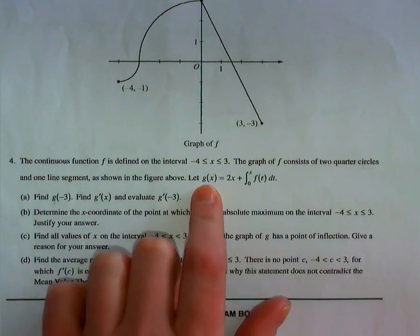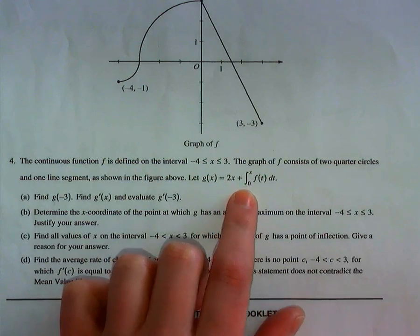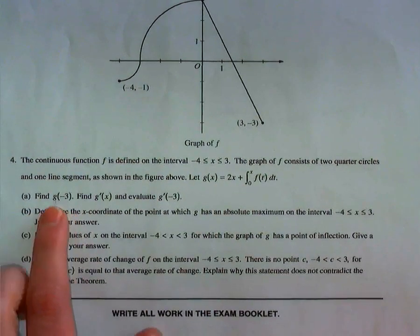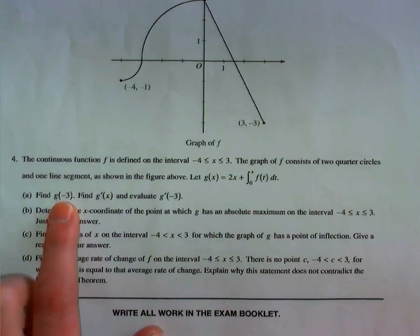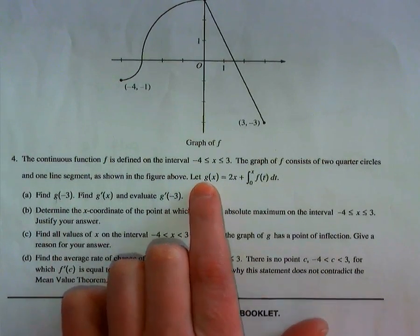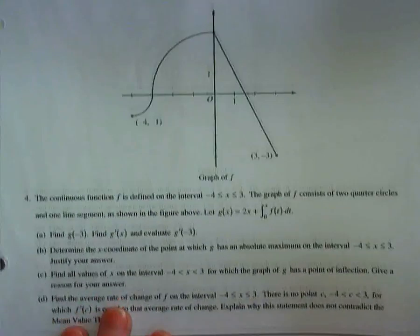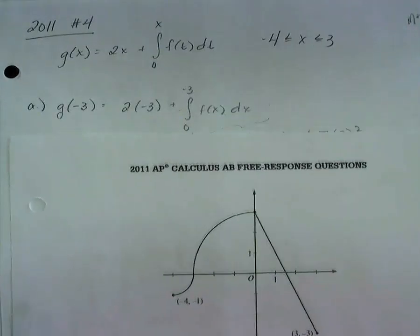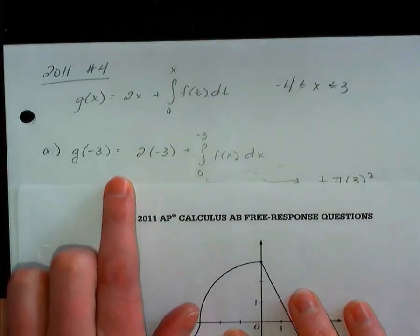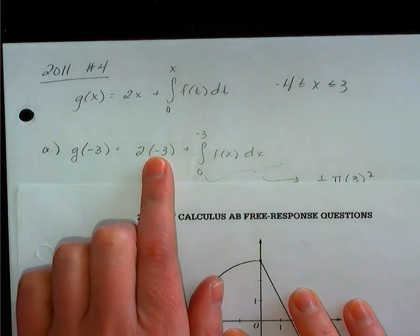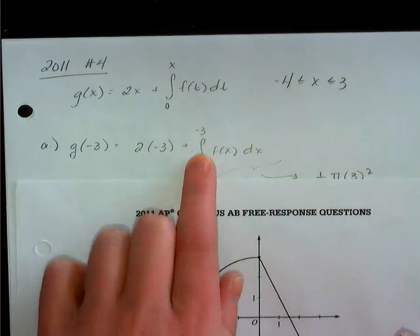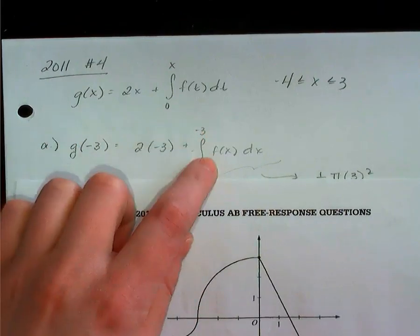And I'm also told that g(x) is 2x plus the integral of f. First thing, find g of negative 3. So that means all I'm doing is subbing in negative 3 to g(x). Every place I see an x, I'm subbing in a negative 3. So looking at this first part, g of negative 3 is 2 times negative 3, so we can get that, plus the integral from 0 to negative 3, because I'm subbing in for x, f(x) dx.